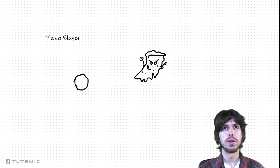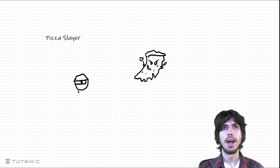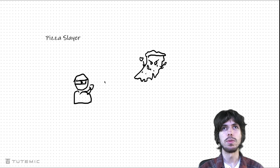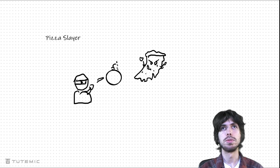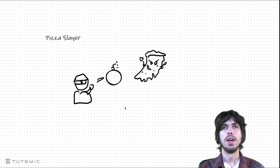And then you also have this little character — maybe a ninja — and it also has angry eyes. How do you defeat this pizza? Well, the best way to defeat pizza? Bombs. You throw your bombs and here's your bomb with a little wick. And so that's how you play.